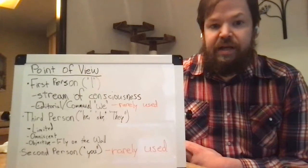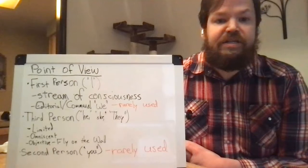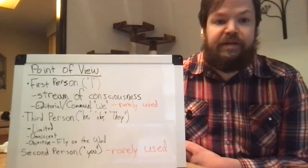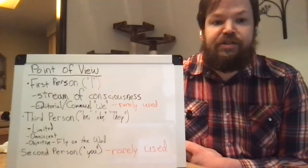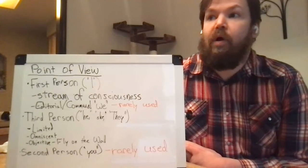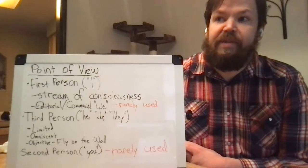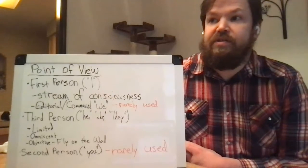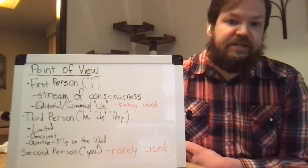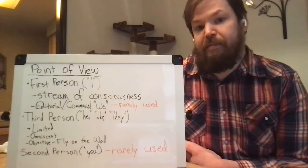Third person uses he, she, they, or the names of the characters. There are three different ways to do third person. One is limited — limited is where you stay with one character. 'He did this. He went to the store.' You can tell one character's thoughts, but only that one character's thoughts. You are physically stuck with that character.